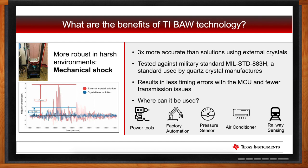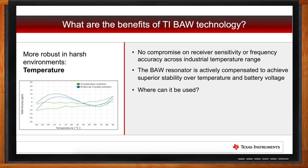Temperature plays a big role in harsh environments as well. Many industrial applications have extended temperature ranges — very hot or very cold — and this affects clocking accuracy. In harsh temperature environments, the crystal-less solution with integrated BAW technology is more accurate than an external crystal with less variance over temperature. This allows even high-temperature environments to maintain good receiver sensitivity and frequency accuracy for your RF system so you're not dropping transmissions. The BAW resonator is actively compensated to achieve this stability over temperature.